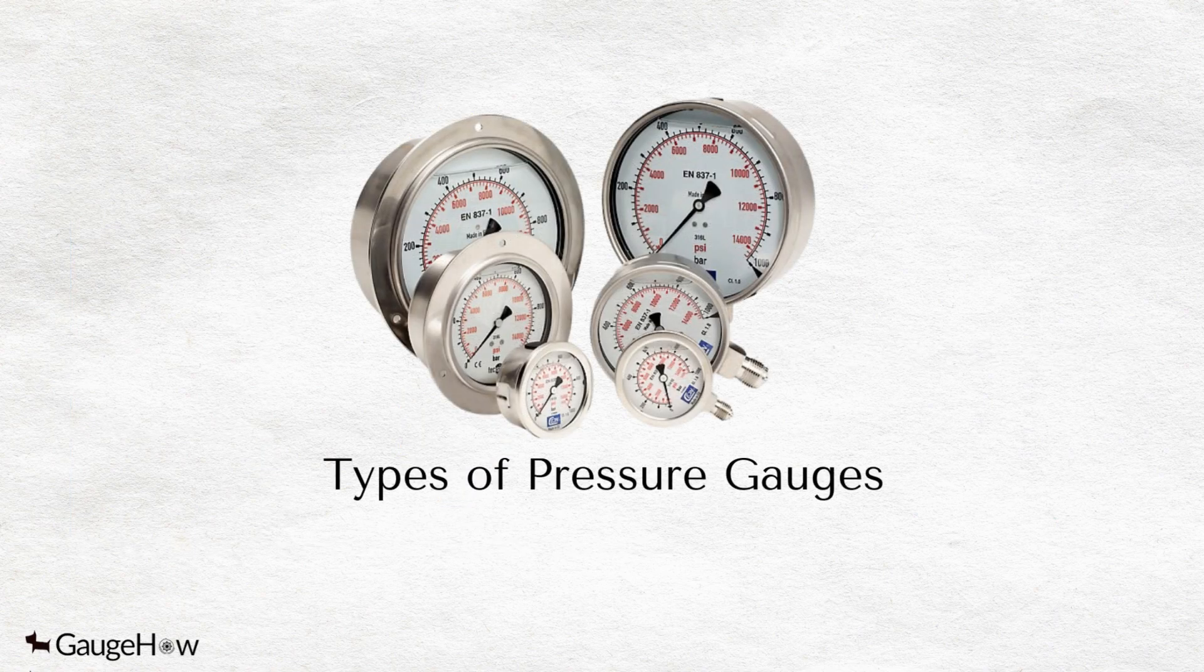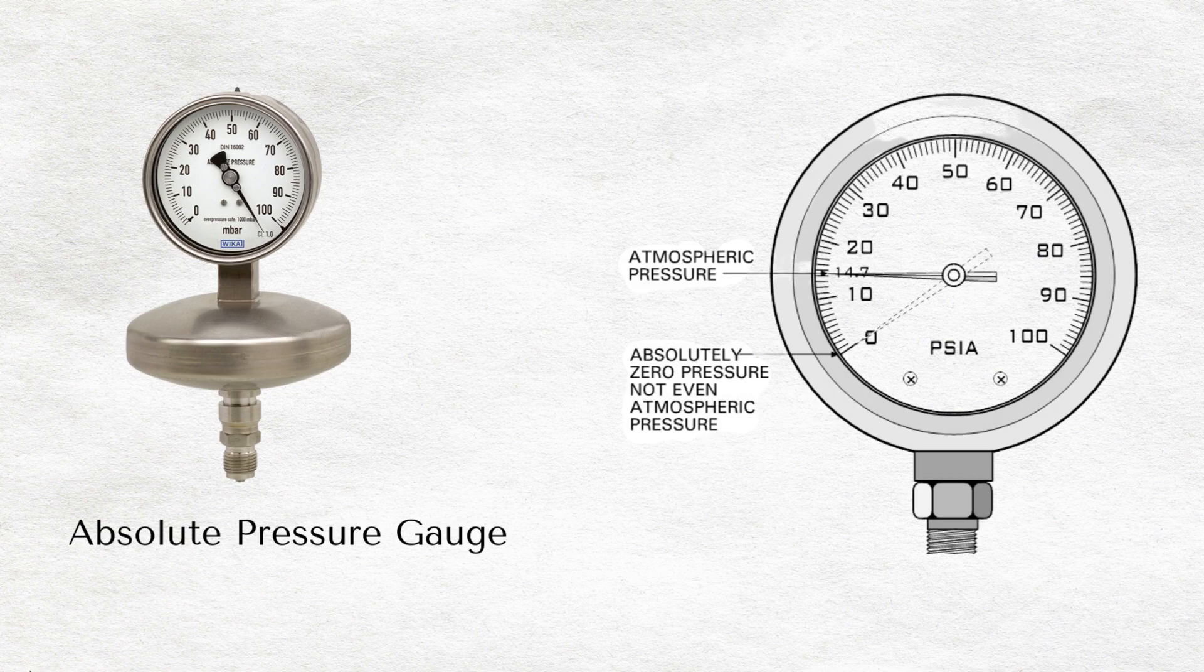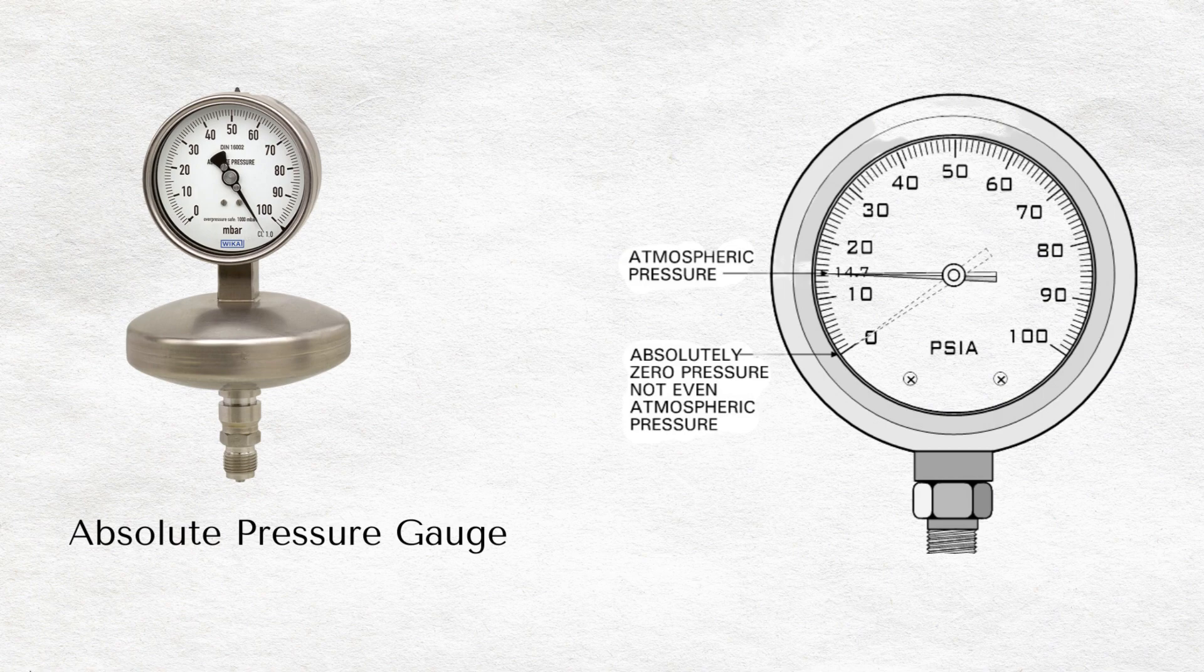Types of pressure gauges. Absolute pressure gauges are used to measure pressure independent of the natural fluctuations in atmospheric pressure. A reference vacuum is attached to the side of the measuring element which is not subject to pressure.